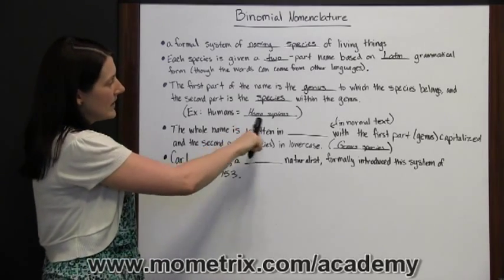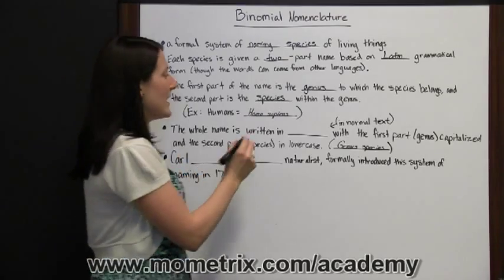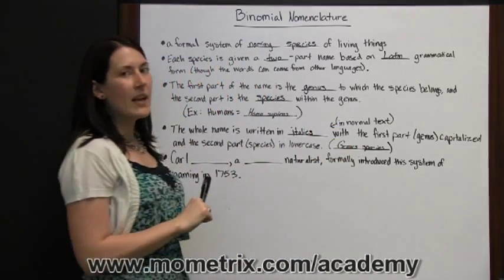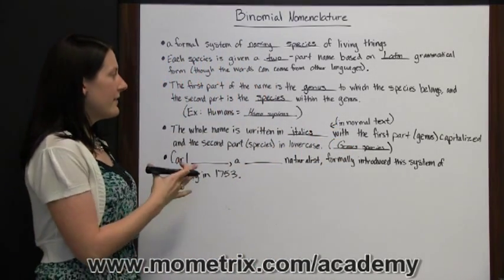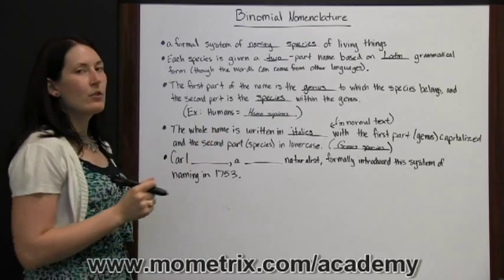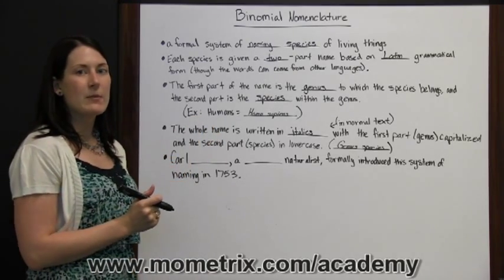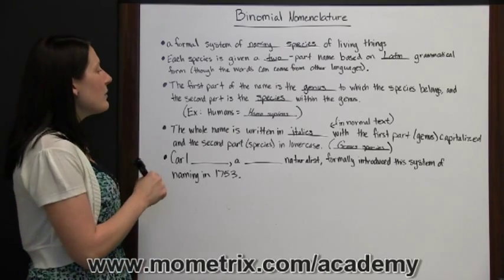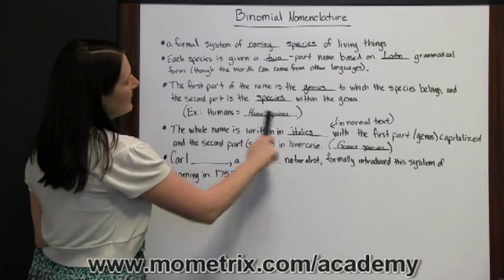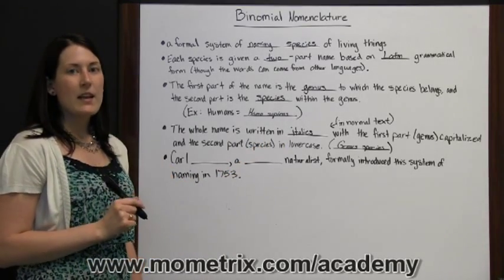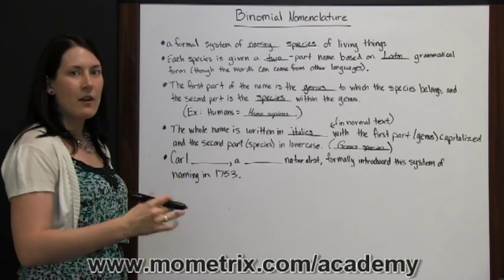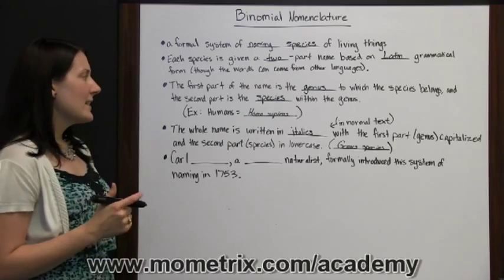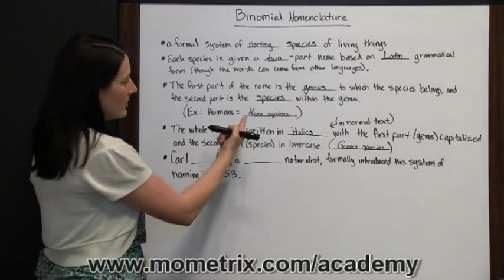Note how it is written as well. The whole name is written in italics. If you were to have the binomial nomenclature — the formal scientific name of a species — in an italicized sentence or paragraph, then you would put just the scientific name in Roman typeface to set it off from the rest. But in normal text, you would italicize the whole scientific name, the genus and species.